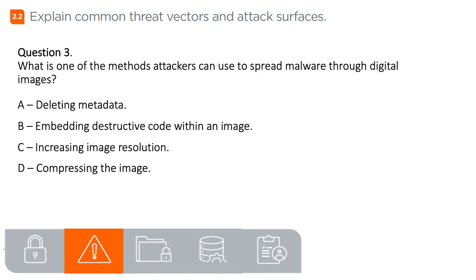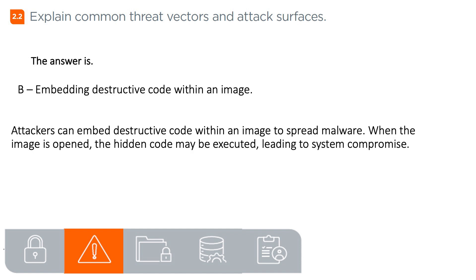Question 3. What is one of the methods attackers can use to spread malware through digital images? A. Deleting metadata, B. Embedding destructive code within an image, C. Increasing image resolution, D. Compressing the image. The answer is B. Embedding destructive code within an image. Attackers can embed destructive code within an image to spread malware. When the image is opened, the hidden code may be executed, leading to system compromise.